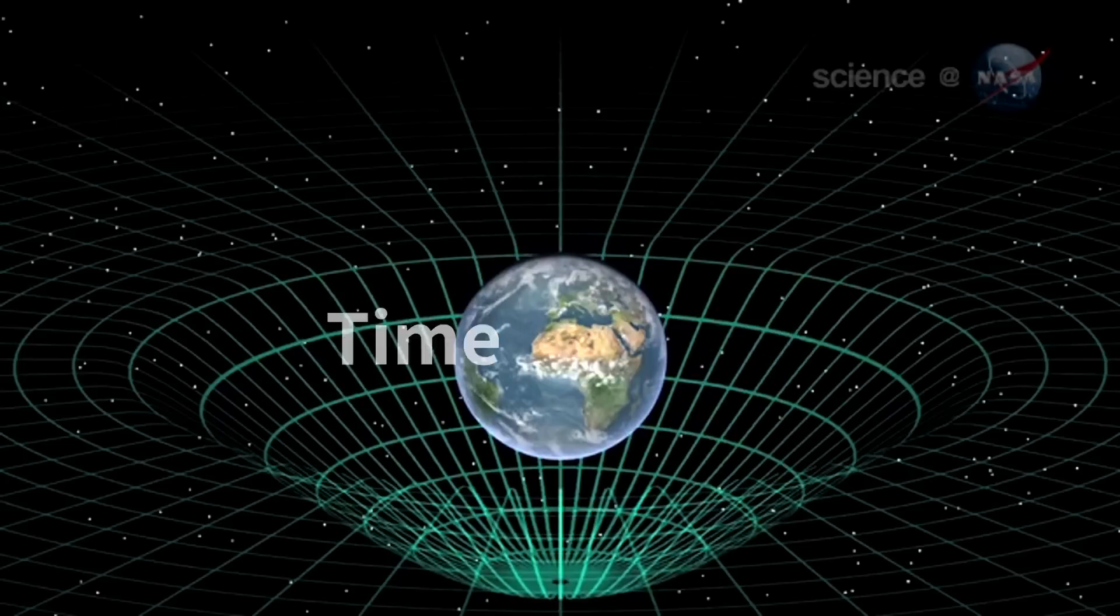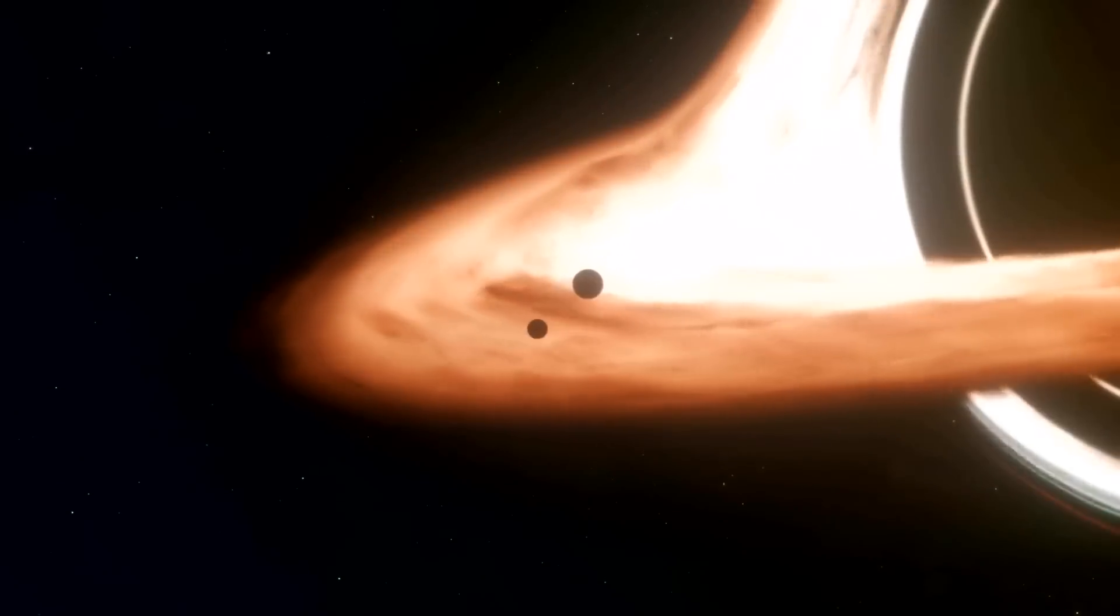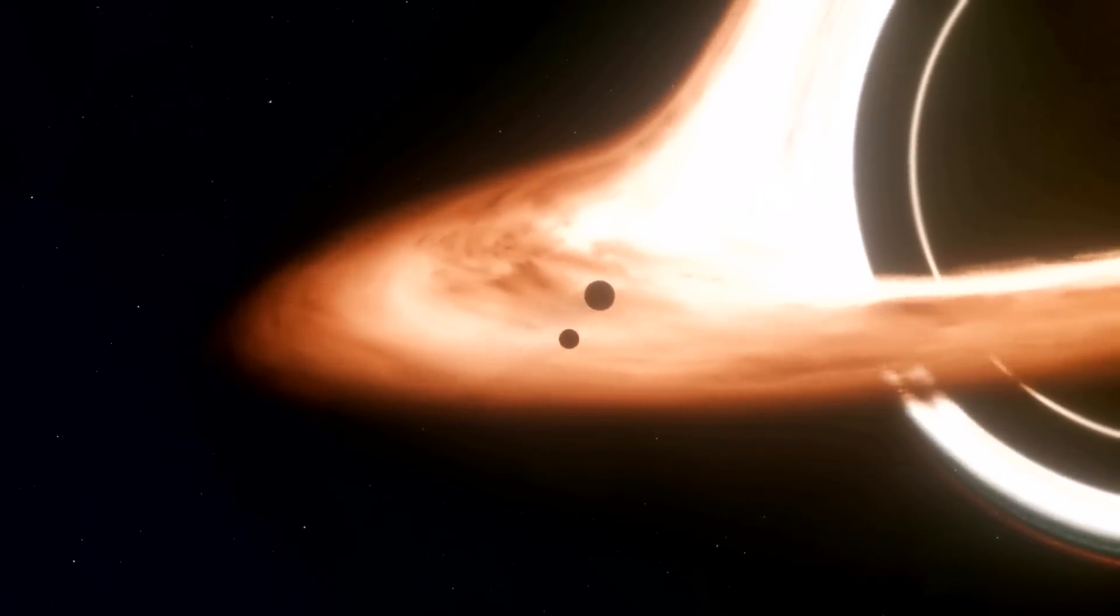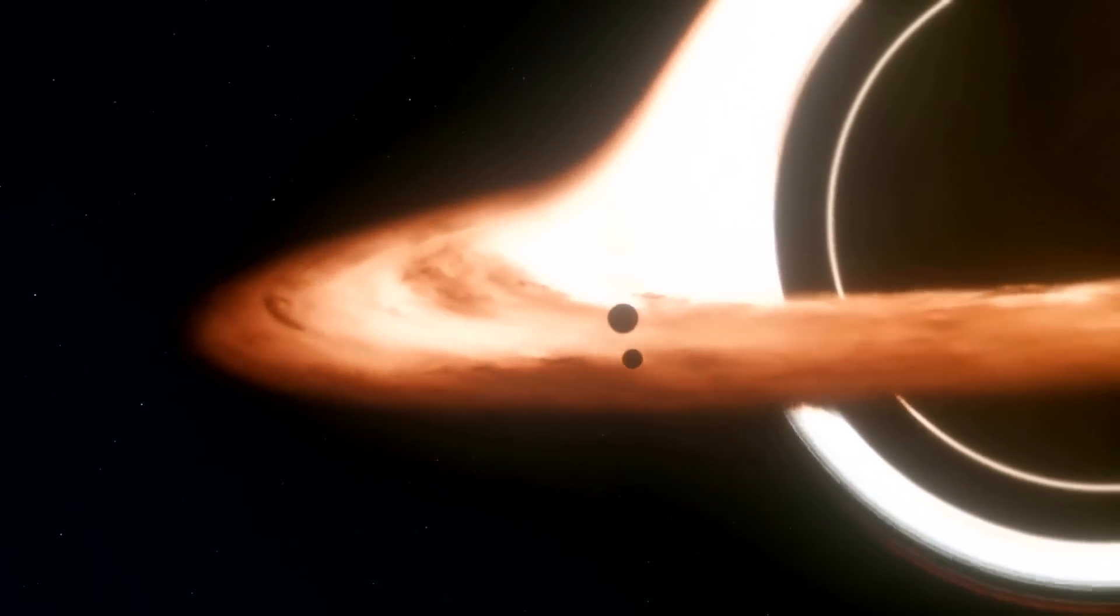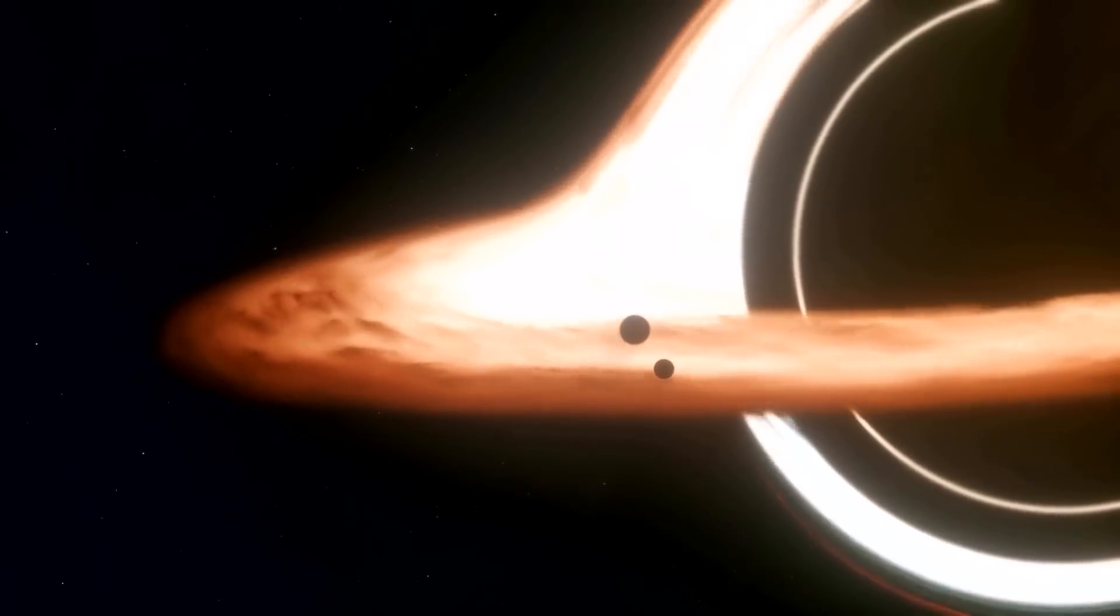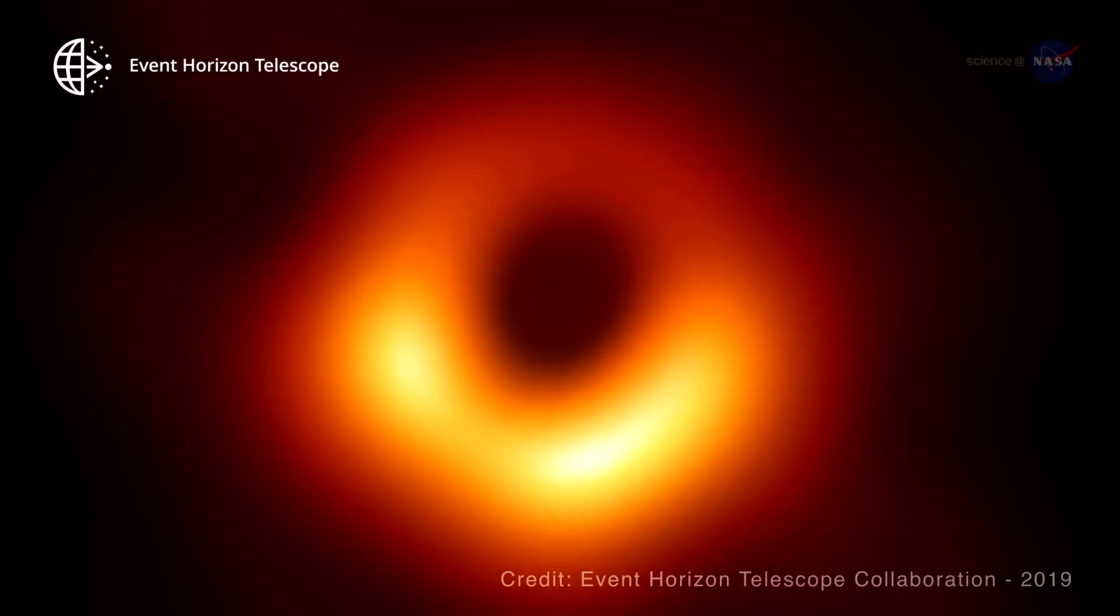Imagine you are watching someone fall into a black hole from a safe distance. As they approach the event horizon, you would see them appear to slow down and eventually freeze, stuck at the edge of the black hole. This is a result of extreme time dilation.